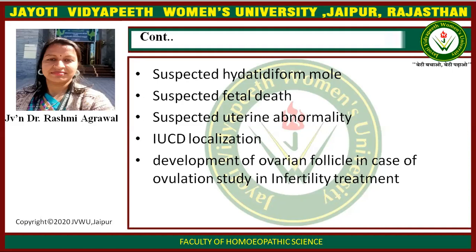Thirteenth, USG helps in identifying suspected uterine abnormalities, including congenital abnormalities of the uterus. Fourteenth, IUCD localization — USG is used to determine whether the IUCD is in the correct position or not.